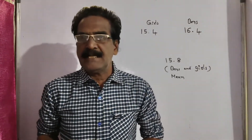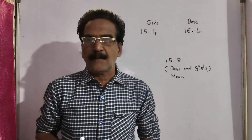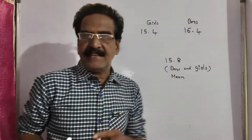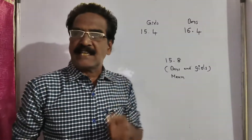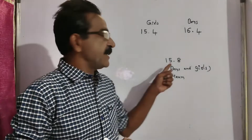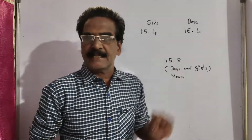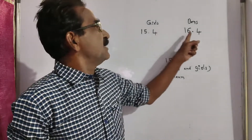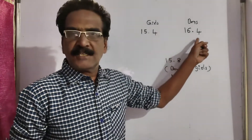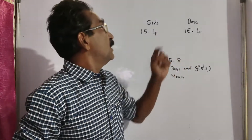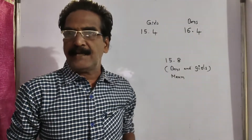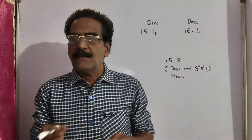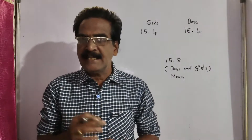Hi friends, good morning. Please look at the next problem in averages. The average age of the students of a class is 15.8 years, and the average age of the boys is 16.4 years, and that of girls is 15.4 years. Then what is the ratio of boys to girls in the class?